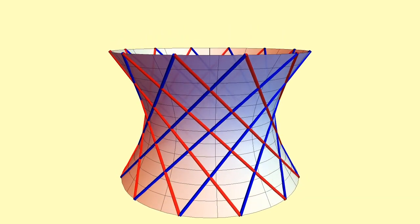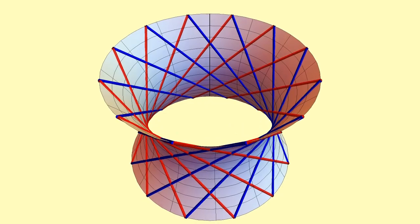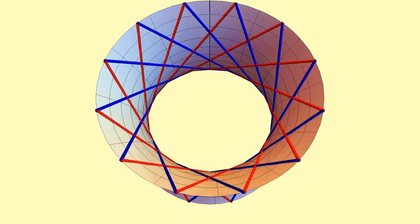I'm using 12 lines in each direction here, 24 lines all together. These are called the ruling lines of the hyperboloid.